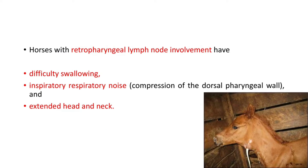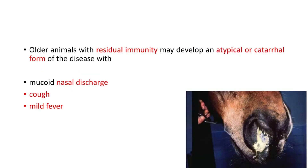Horses with retropharyngeal lymph node involvement have difficulty swallowing, inspiratory respiratory noise due to compression of the dorsal pharyngeal wall, and an extended head and neck. Older animals with residual immunity may develop an atypical or catarrhal form of the disease with mucoid nasal discharge, cough, and mild fever.